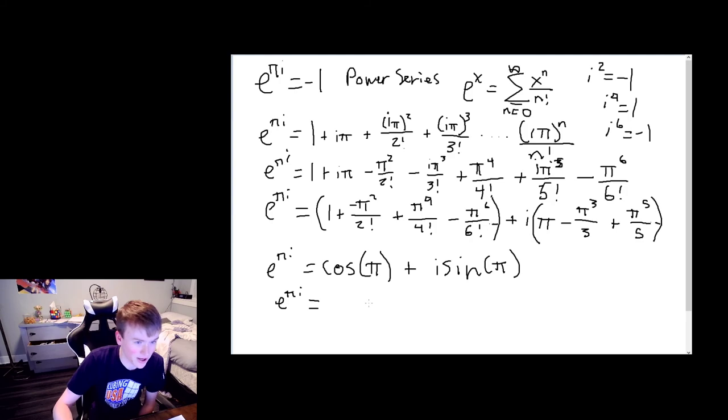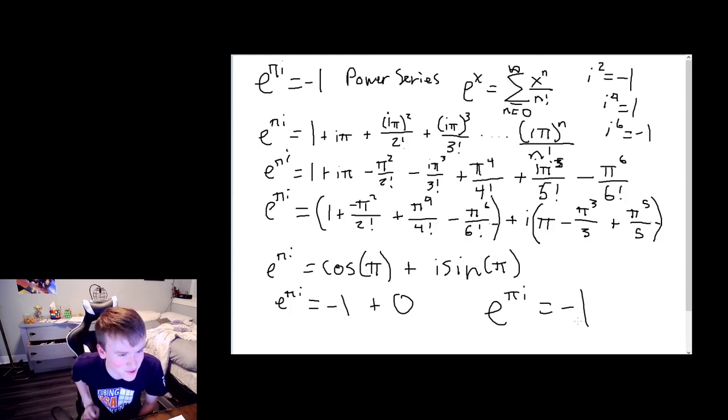Of course, we know what the cosine of π is. That's negative one, right? Pointing to negative one on the unit circle. So that's negative one. And of course, sine of π is pointing no direction up, so sine of π is zero. And so, in conclusion, e^(πi) does actually equal negative one.